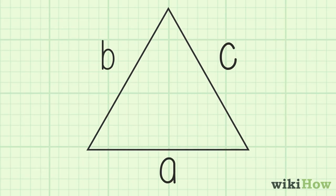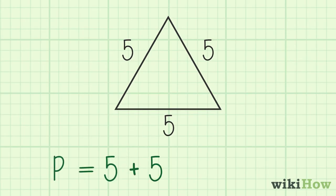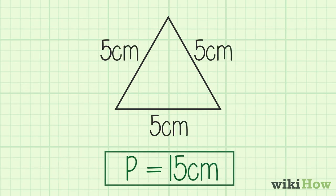For example, if the length of each side of the triangle is 5, you would just add 5 plus 5 plus 5 and get 15. Therefore, the perimeter of the triangle is 15.